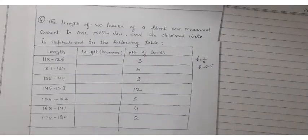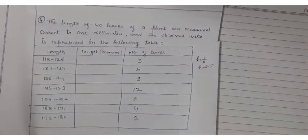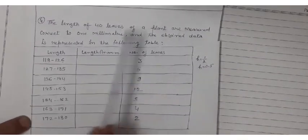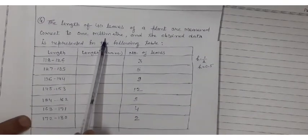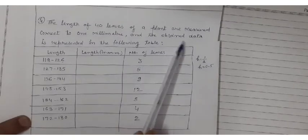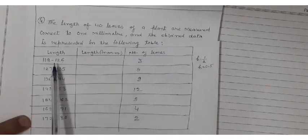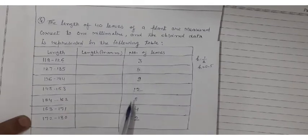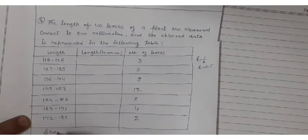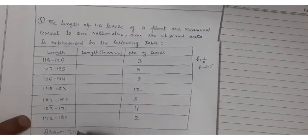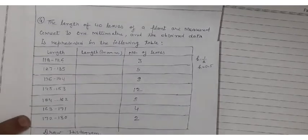The next question: the length of 40 leaves of a plant are measured, correct to 1 millimeter, and the obtained data is represented in the following table. Data is given to you. What you have to draw? You have to draw histogram with help of this table.